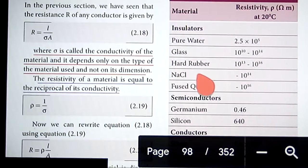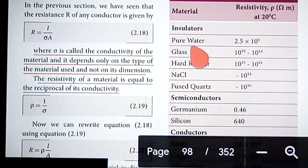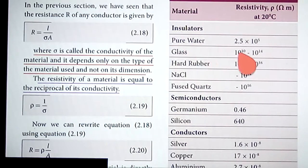You can see materials such as insulators like pure water will have resistivity of 2.5 times 10 power 5 ohm meter. For glass it is 10 power 10 to 10 power 14 and for hard rubber is 10 power 13 to 10 power 16.